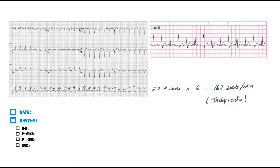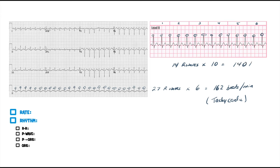Let's take another example. This is a 6-second rhythm strip: 1, 2, 3, 4, 5, 6, 7, 8, 9, 10, 11, 12, 13, 14. So 14 R waves, and you multiply that by 10 — that's equal to 140 beats per minute. And that's still greater than 100 beats per minute.